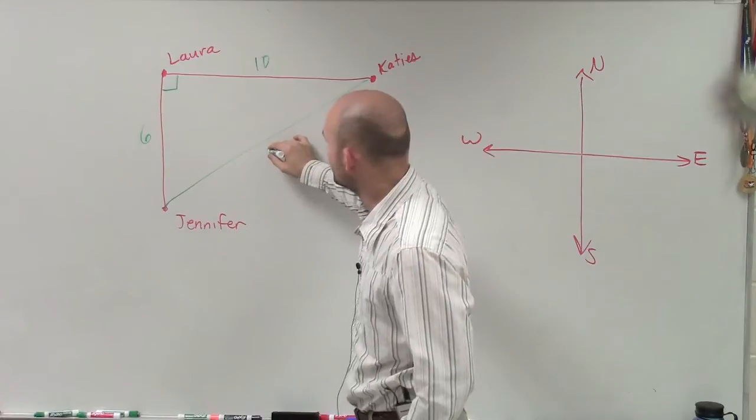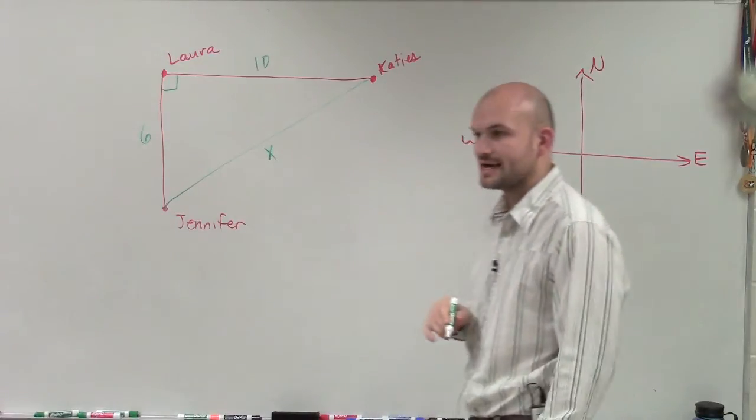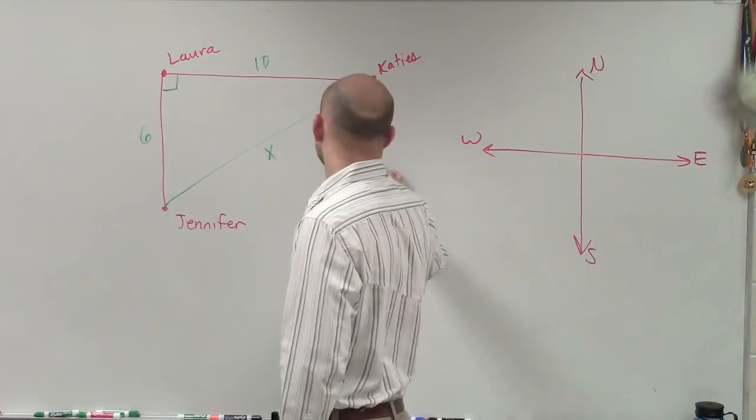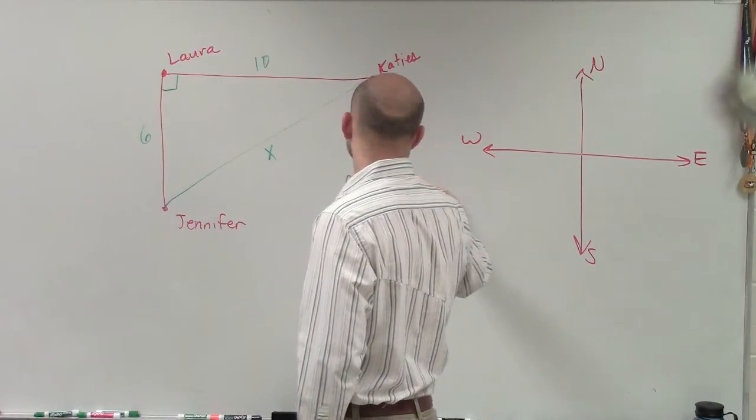So now, what we need to determine is this distance x. So as you guys are familiar with, Pythagorean Theorem, a squared plus b squared equals c squared.